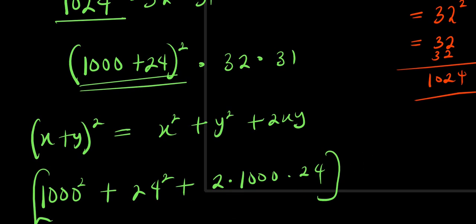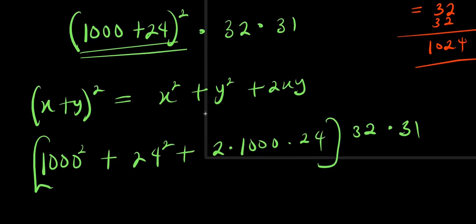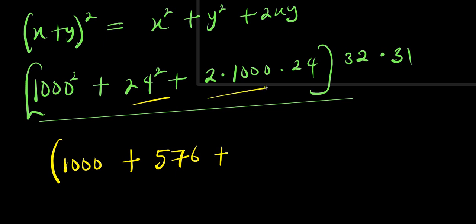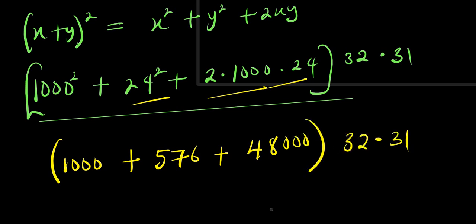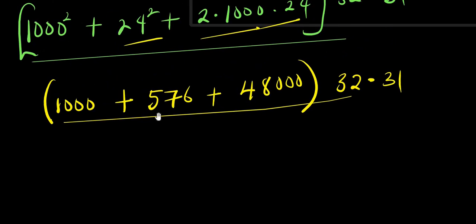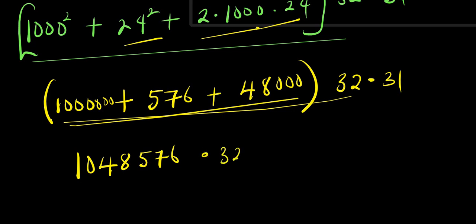Applying that identity: (1000+24)^2 equals 1000 squared plus 24 squared plus 2 times 1000 times 24. So that is 1,000,000 plus 576 plus 48,000, and this whole bracket multiplies 32 and then 31. Adding inside the bracket: 1,000,000 plus 576 plus 48,000.